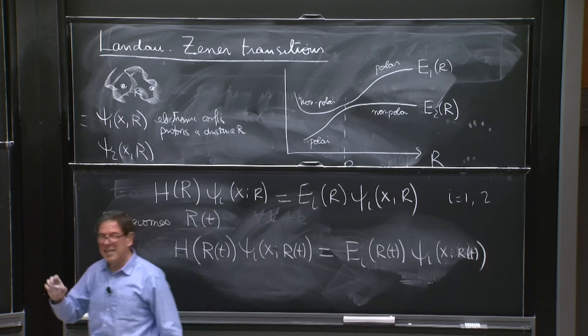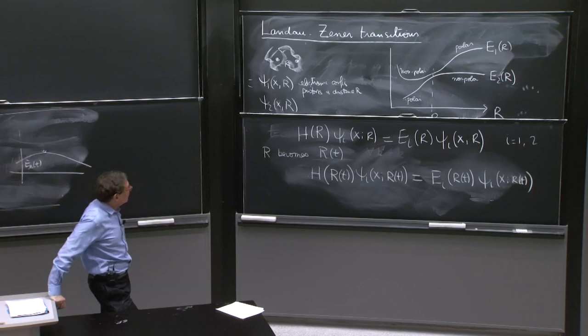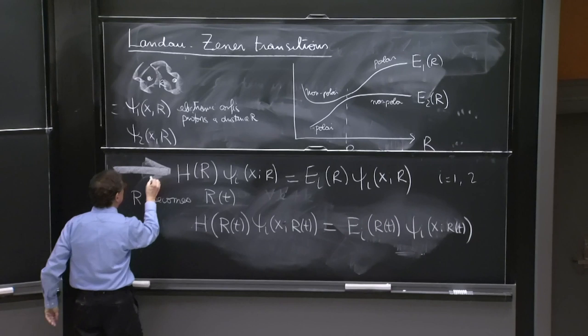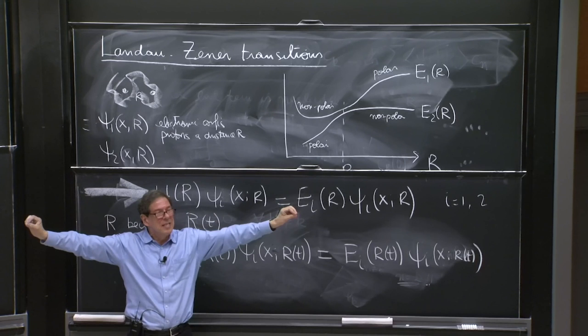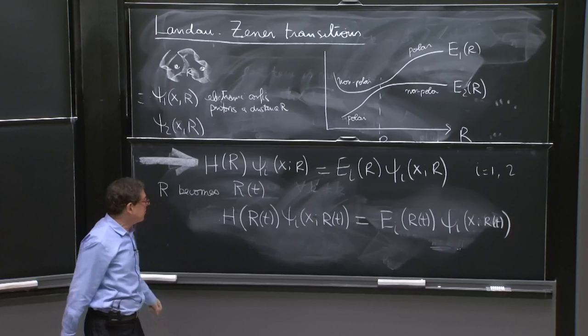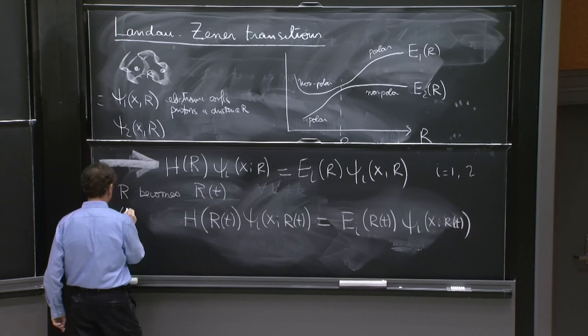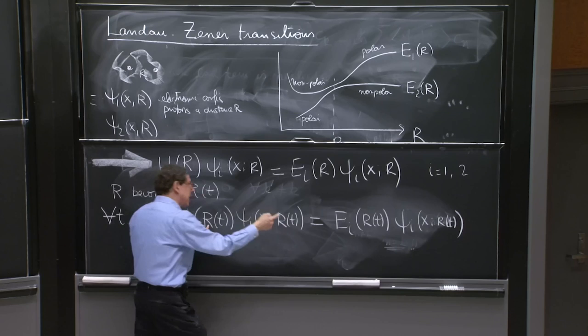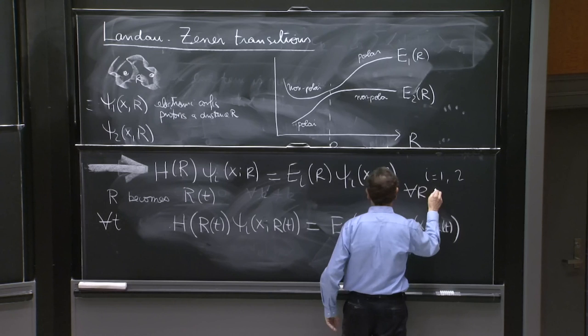These wave functions, ψᵢ, are r of t, and ψᵢ's become x of r of t. This is an important point. It's simple but important. Most important points in physics are simple, but you have to stop and recognize that something slightly new is happening here. If you have solved this equation for all values of r, if you know those energy eigenstates for all separations of the molecule, you now have found instantaneous energy eigenstates if it so happens that r is a function of t.